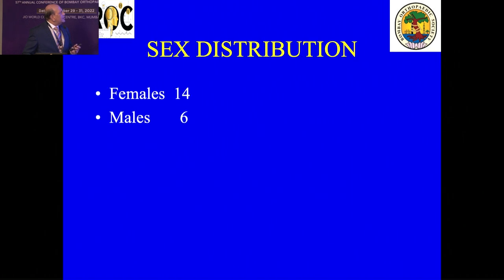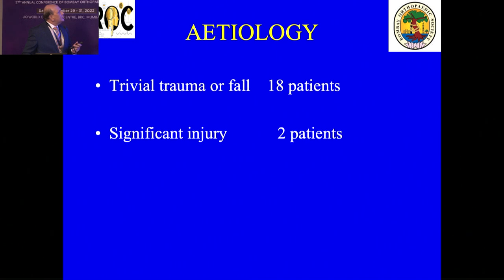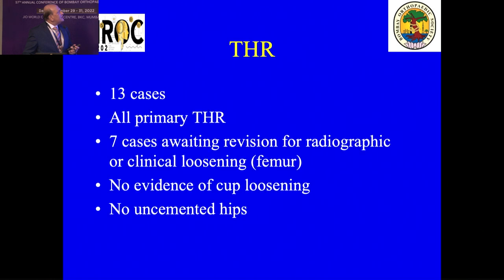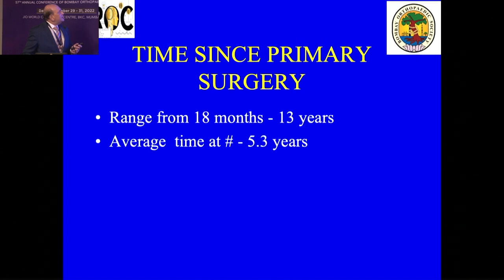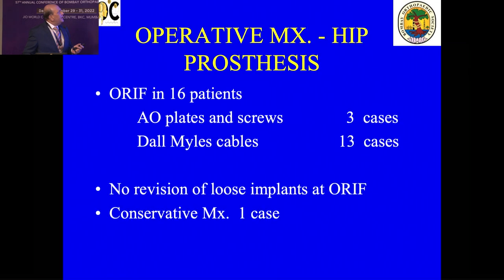Type B was fixed with the Dall-Miles cables — that is the outcome. Another type B, more on the lines of osteoporosis with instability, was fixed differently, well below the stem tip. Most cases I have done in Oswestry with Mr. Spencer Jones, and I am focusing on what we found to be important. In our small series of 20 patients — good mix, females clearly outnumbering males, elderly patients — we are seeing more hemiarthroplasties and revisions coming back. Trivial injury and fall is mostly the cause. Time since primary surgery can range from 18 months to 13 years.